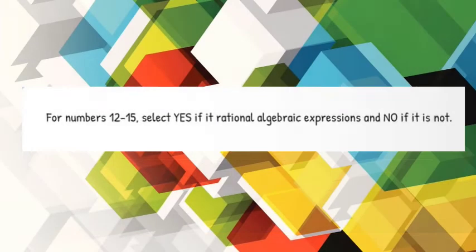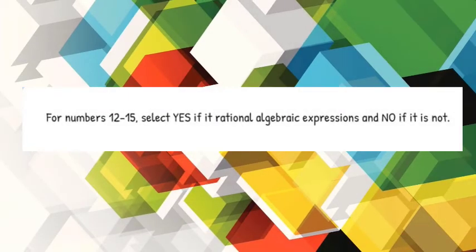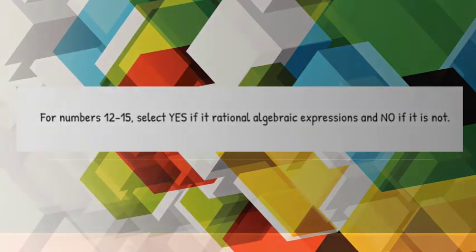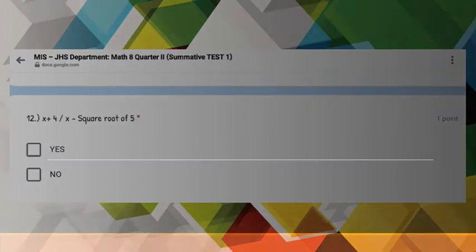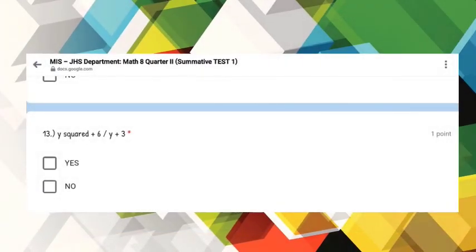For numbers 12 to 15, select Yes if it is a rational algebraic expression and No if it is not. Number 12: X plus 4, all over X minus the square root of 5. Number 13: Y squared plus 6, all over Y plus 3.